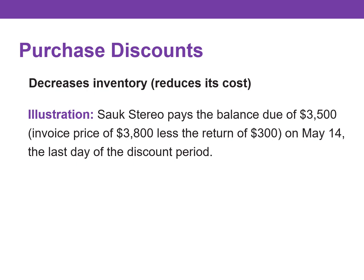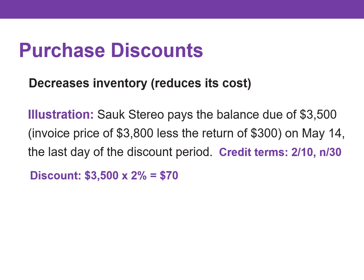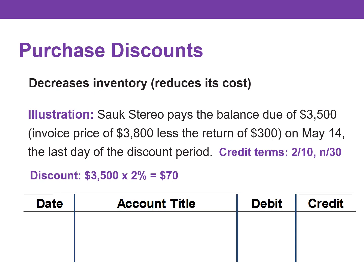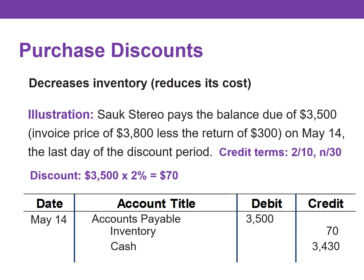To illustrate, let's assume Salk Stereo pays the balance due of $3,500 — which represents the invoice price of $3,800 less the purchase return of $300 — on May 14th, the last day of the discount period. The credit terms are 2/10, net 30, so the cash discount is $70. We simply take the net amount owed, $3,500, and multiply by 2%. The journal entry to record payment results in a debit to accounts payable for $3,500, a credit to inventory for $70 representing the discount, and a credit to cash for the net amount owed of $3,430.